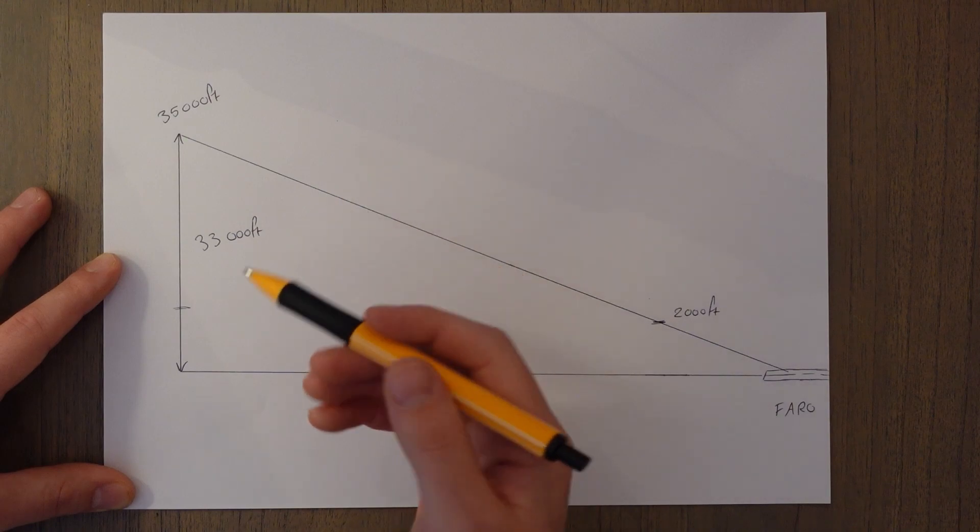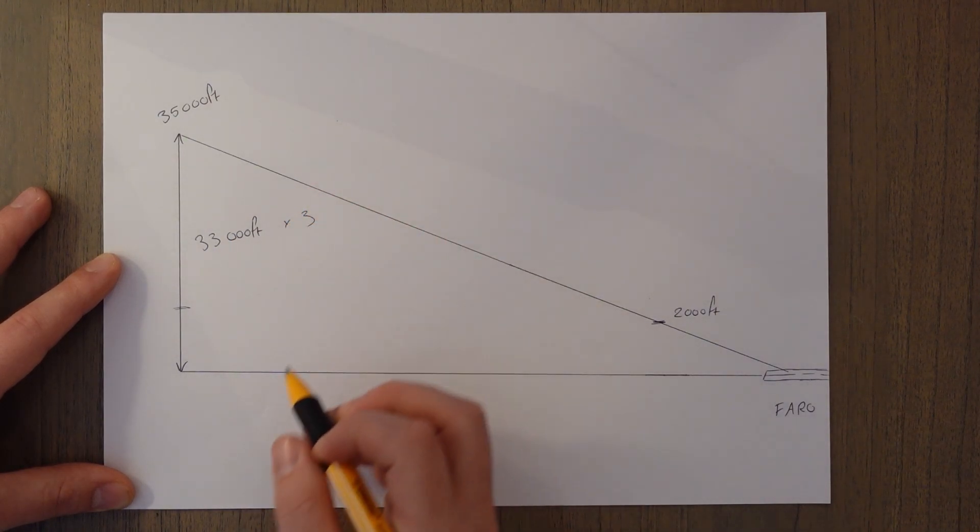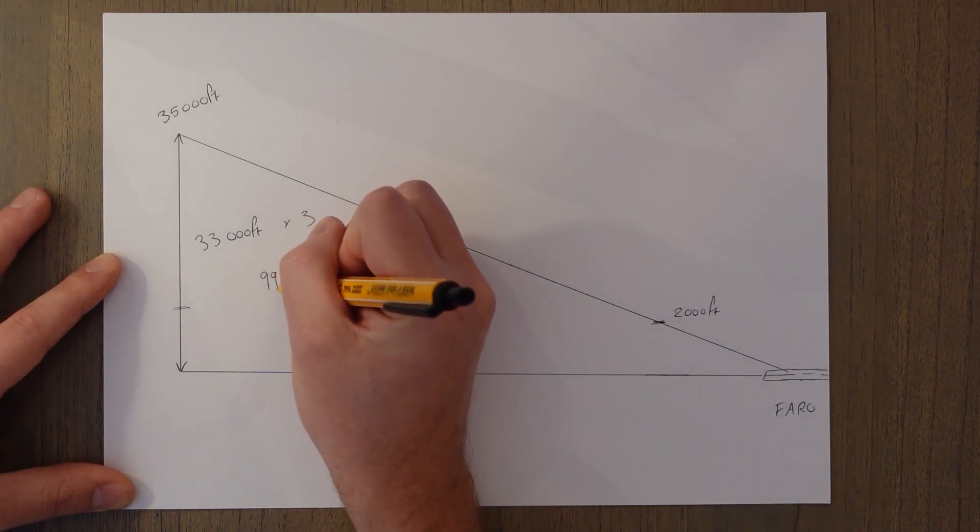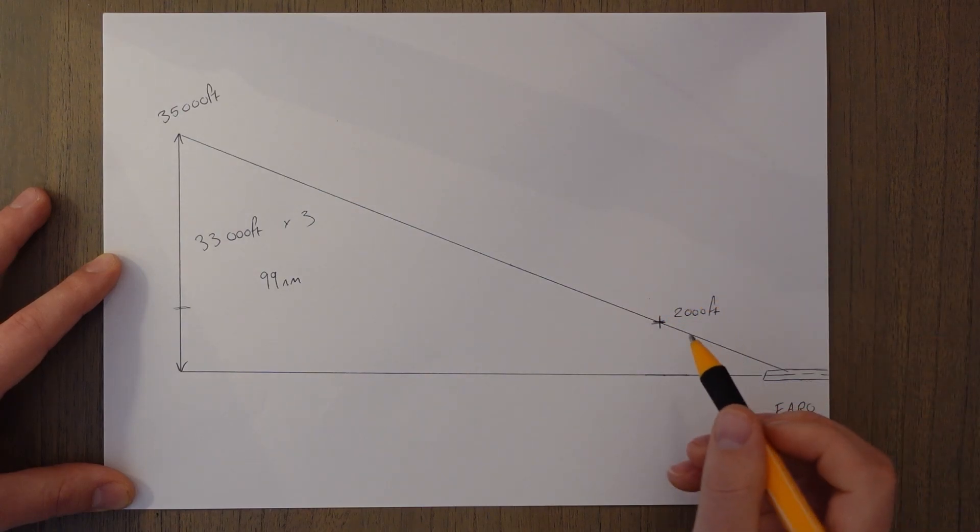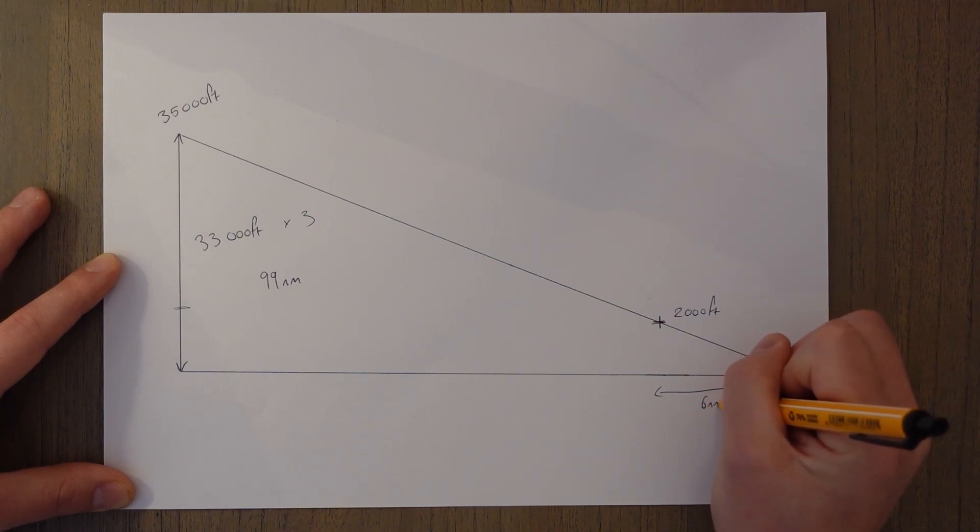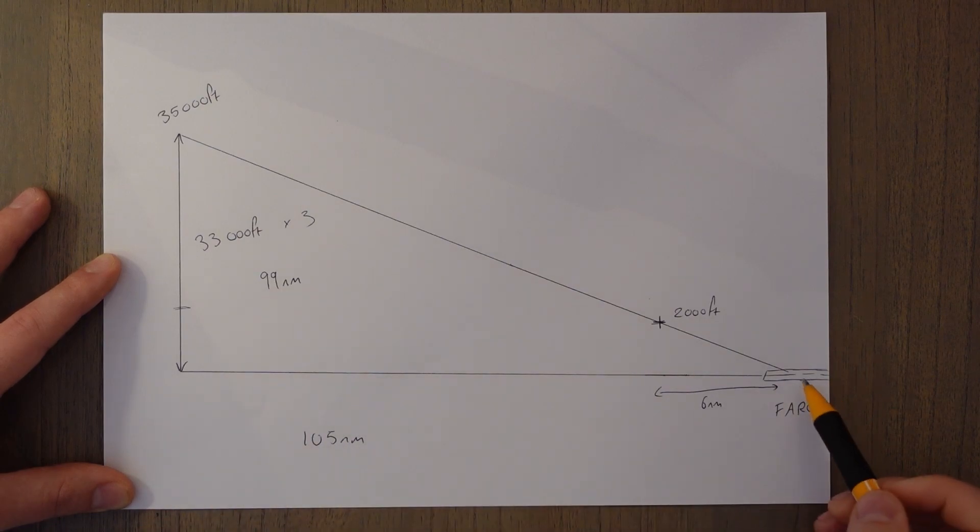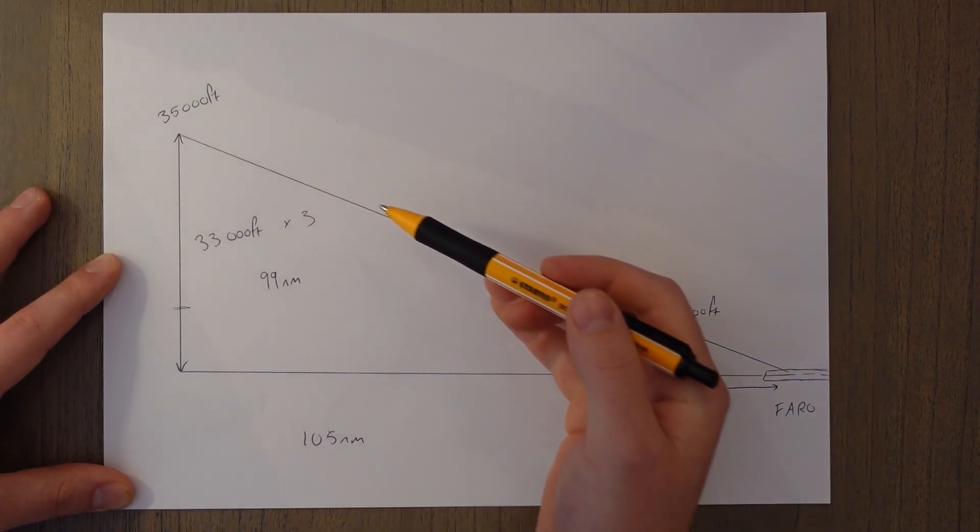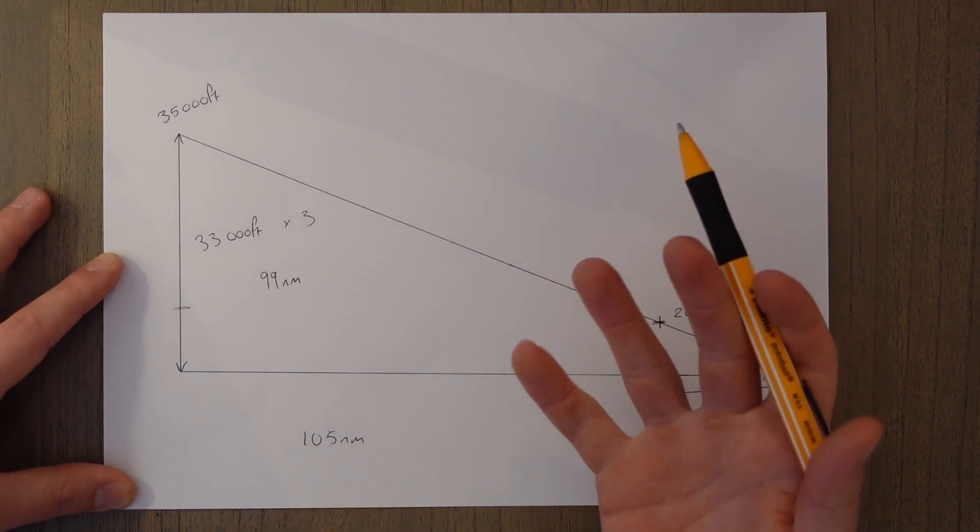We would just multiply that by three and we would find out that we need to descend 99 nautical miles before this point. And that point, if you remember, was at six nautical miles, so if we descend 105 nautical miles before the runway threshold of Faro, we should get a nice gentle slope in towards landing. That won't come up in the ATPL exams, but it's just a handy wee trick to know when you're actually flying aircraft.